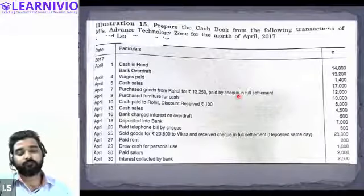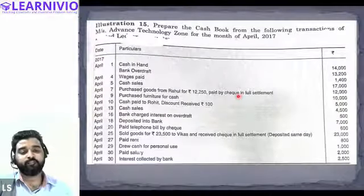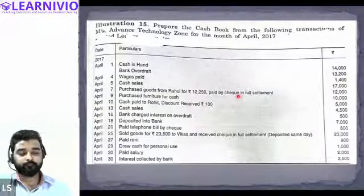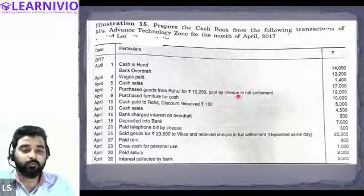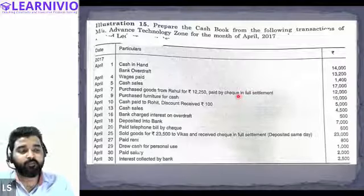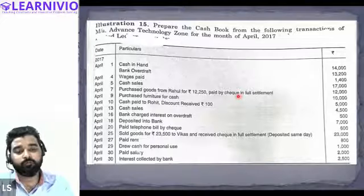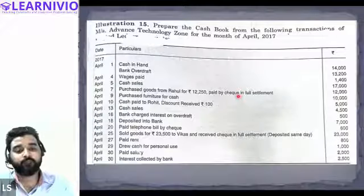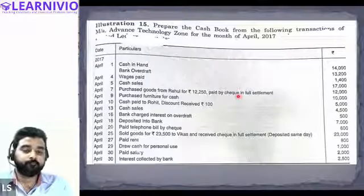On April 9th: purchasing furniture for cash — By Furniture Account on the credit side in the cash column. Next: cash paid to Rohit, discount received 100 — total amount payable was 5,100 but we pay only 5,000. Rohit will be credited in the cash column.